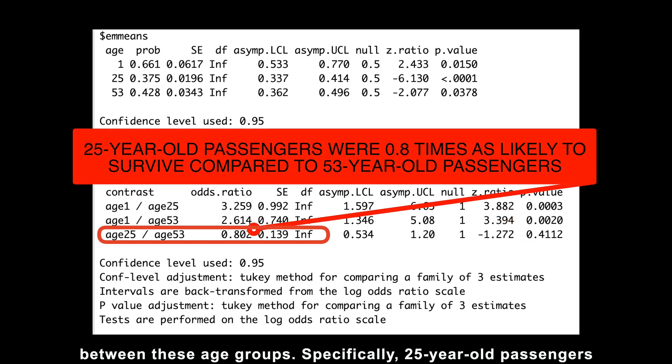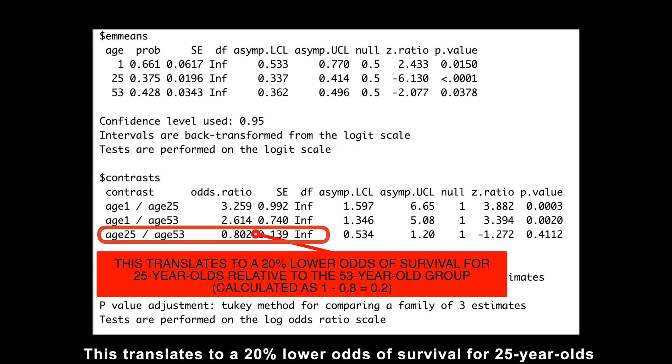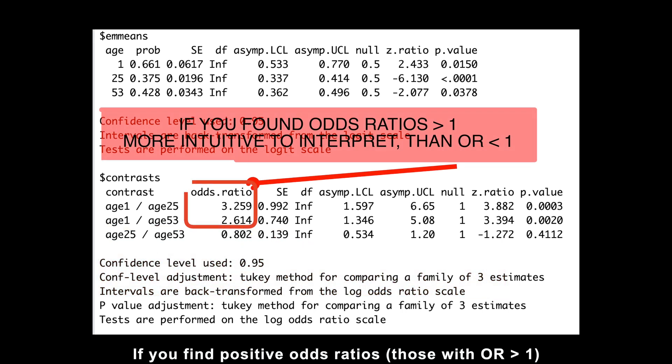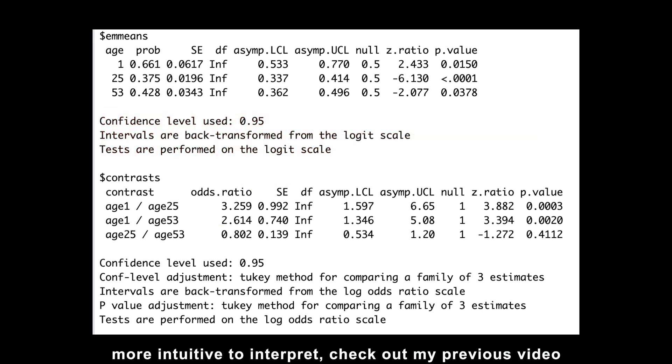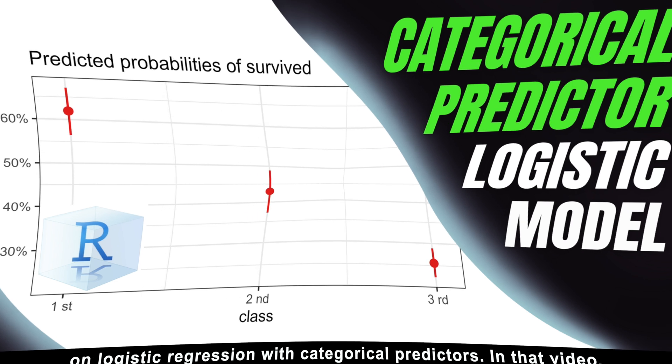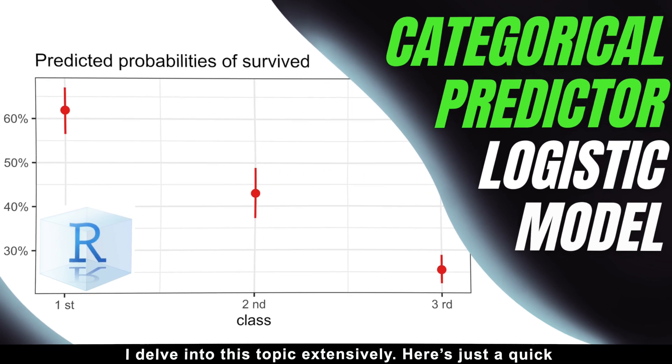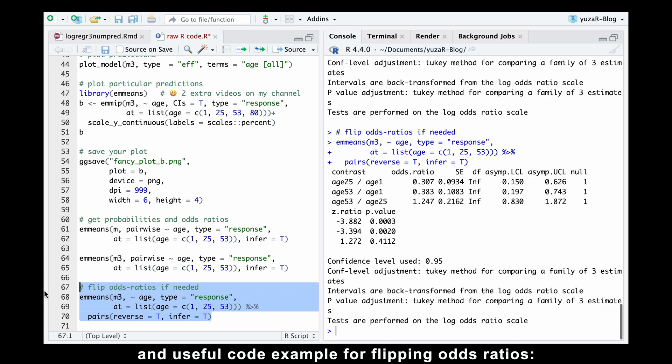Specifically, 25-year-old passengers were 0.8 times as likely to survive compared to 53-year-old passengers. Now, this translates to a 20% lower odds of survival for 25-year-olds relative to the 53-year-old group. If you find positive odds ratios, though with odds ratios over 1 more intuitive to interpret, check out my previous video on logistic regression with categorical predictors. In that video, I delve into this topic extensively.